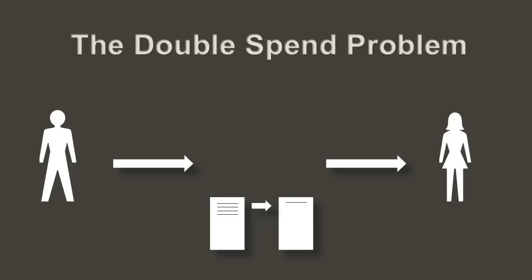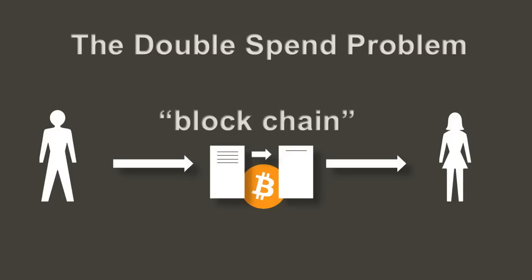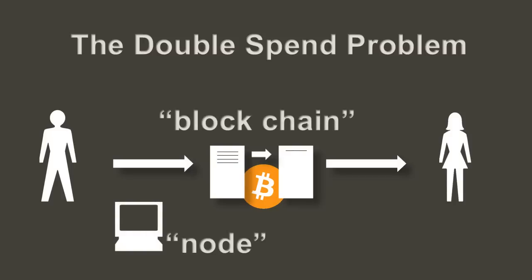What if you wanted to eliminate the bank? How would you know Bob moved money from his account to Sally's account? Bitcoin uses a public ledger, commonly referred to as the blockchain. This ledger is kept by everyone. Each computer on the network, commonly referred to as a node, has a copy of the ledger. Bitcoin eliminates the bank — now you know why banks don't like Bitcoin.